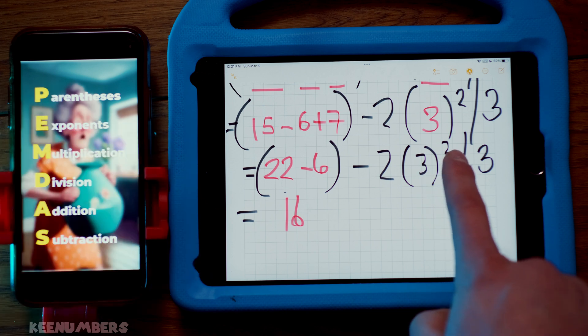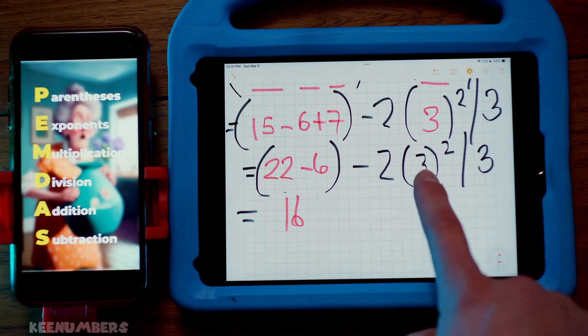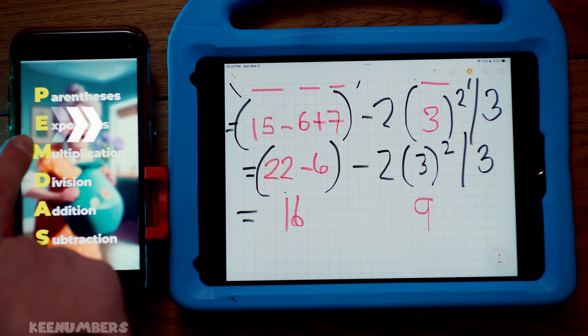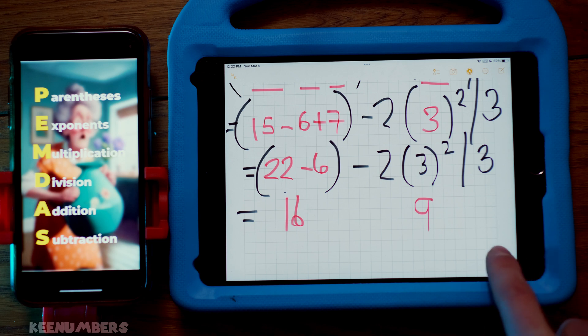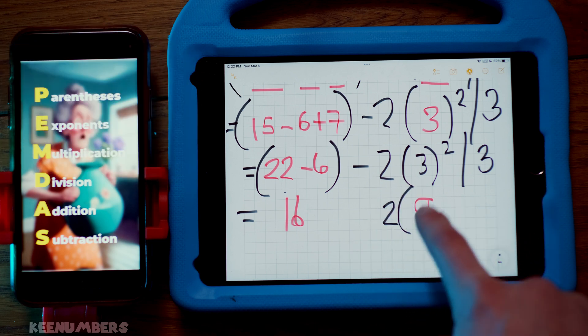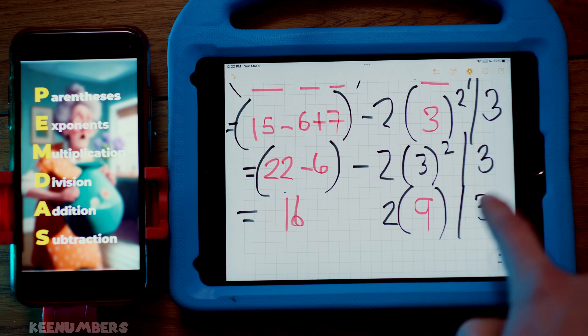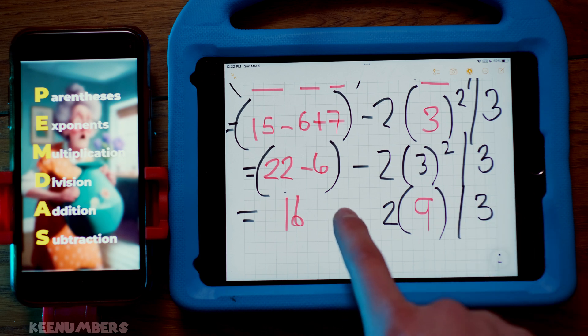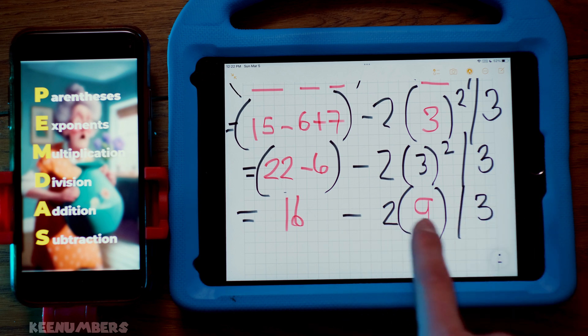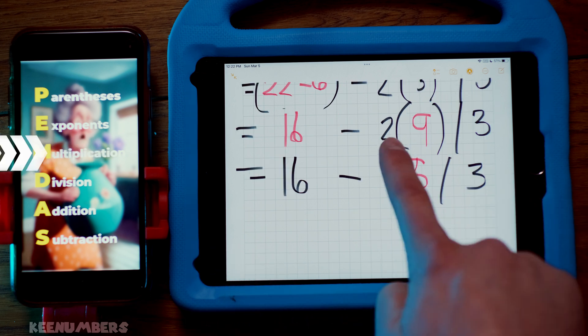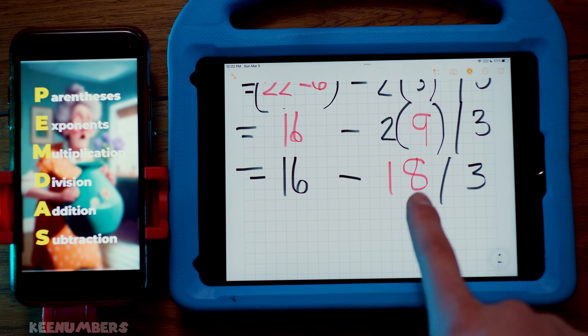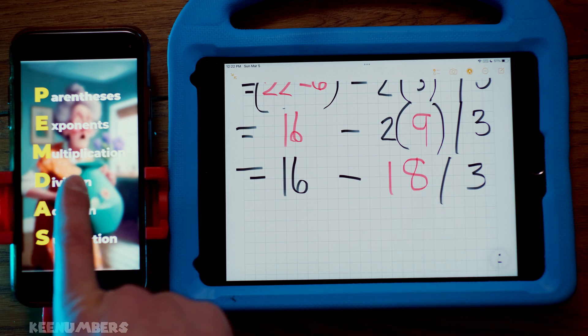Now you can address this exponent here. Three squared. That is nine because the exponents come next. Please excuse my dear Aunt Sally. And then you're gonna divide by three. Don't panic here. This means multiplication. Two nines. You know how to do that. Two nines, that's 18. And now we can carry out the division.